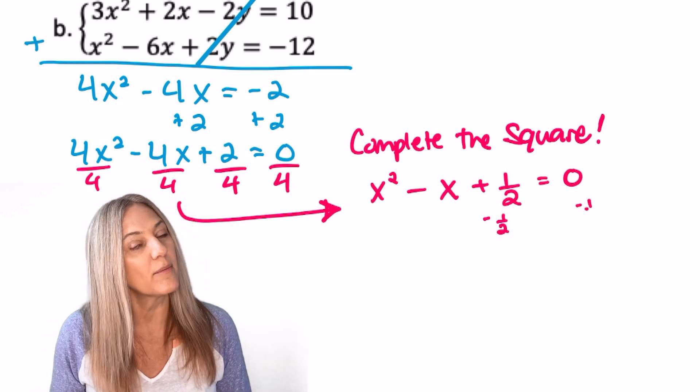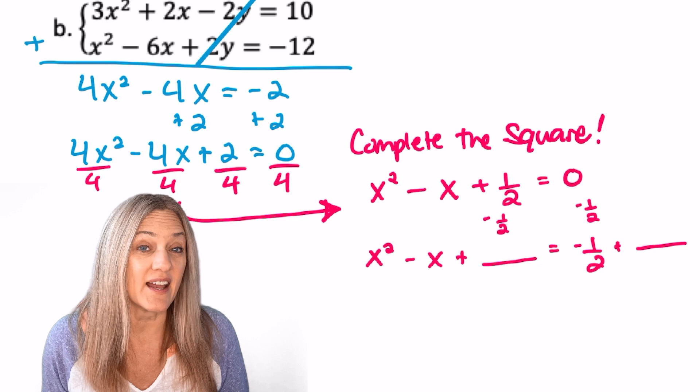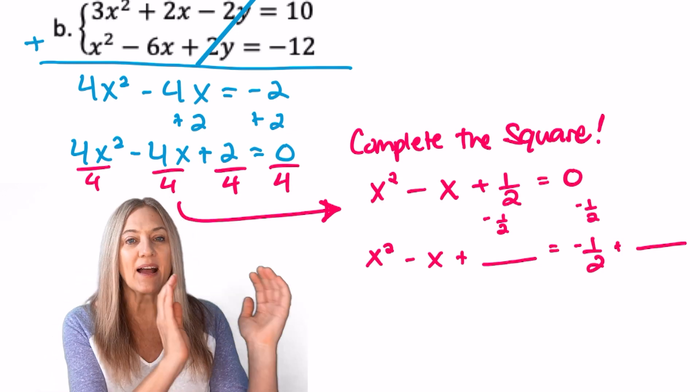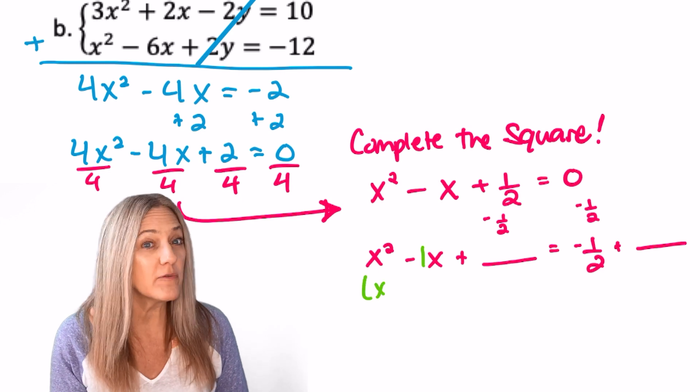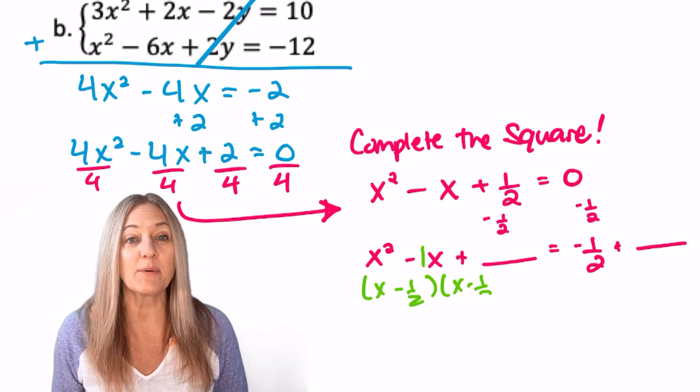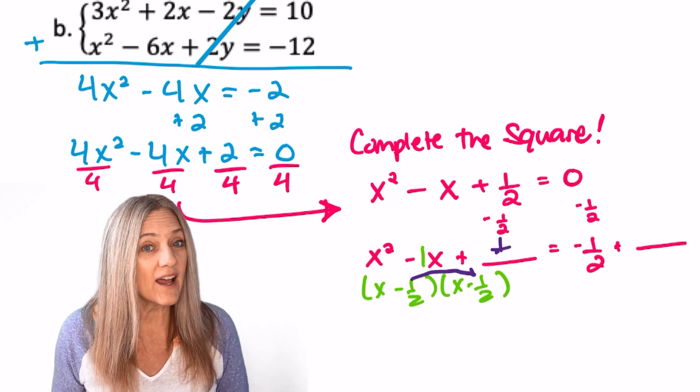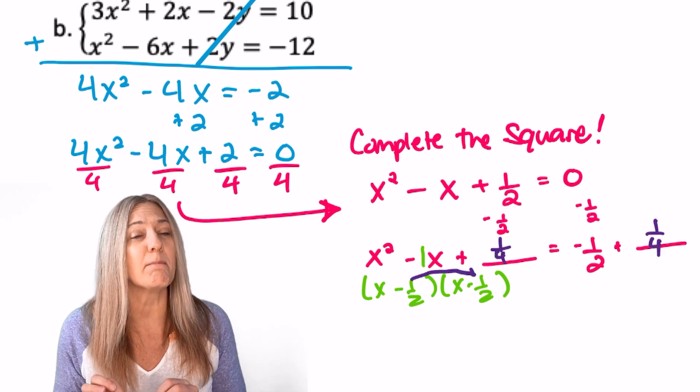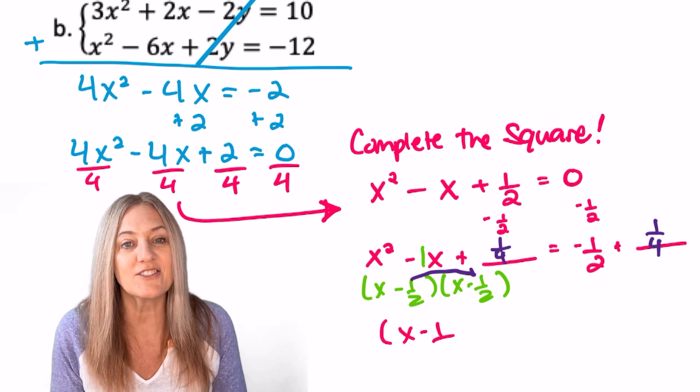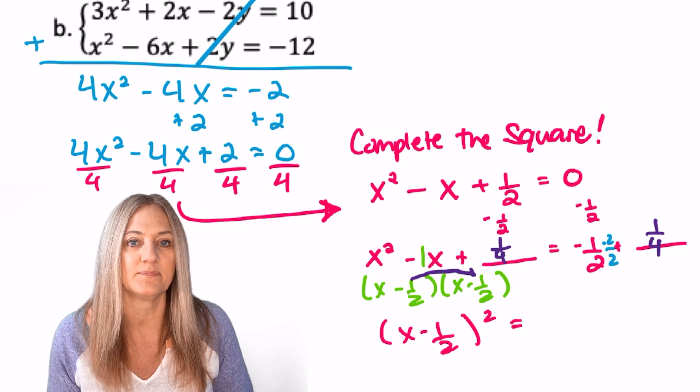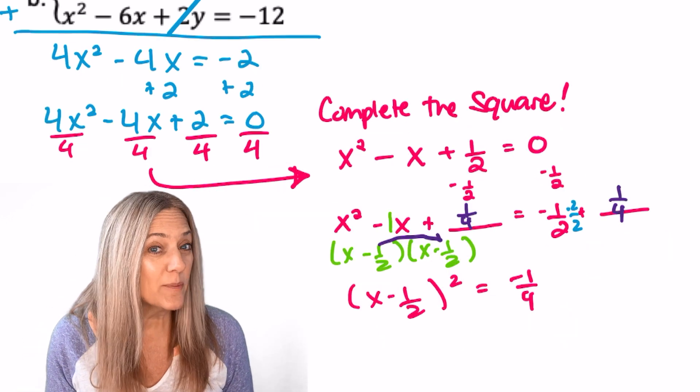So now let's set up for completing the square. Subtract the 1 half, move it over. Now decide what do we need to add to both sides. Let's look at those binomials. Well, half of b is 1 half. So I would have x minus 1 half times x minus 1 half. Negative 1 half times negative 1 half is positive 1 fourth. I just need to add 1 fourth to both sides. That wasn't too bad.